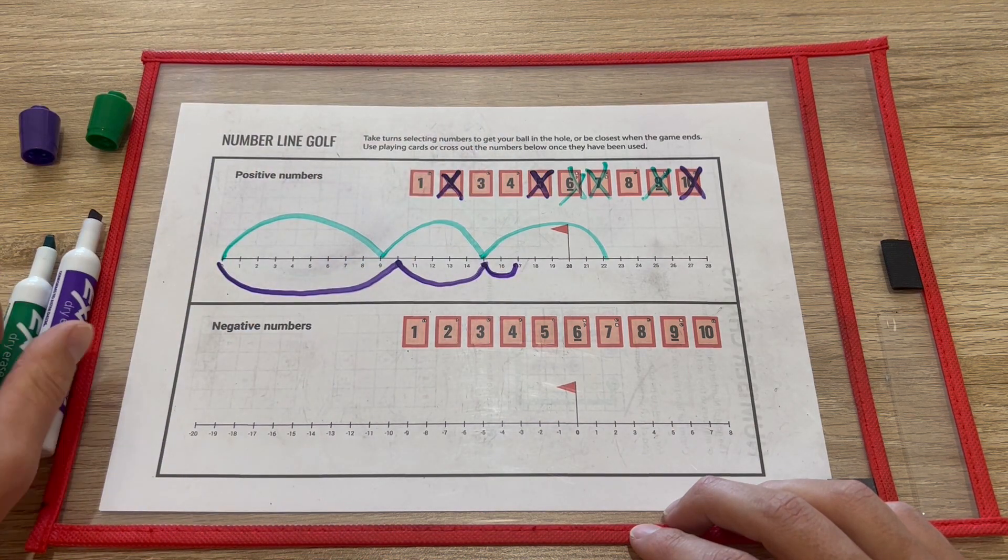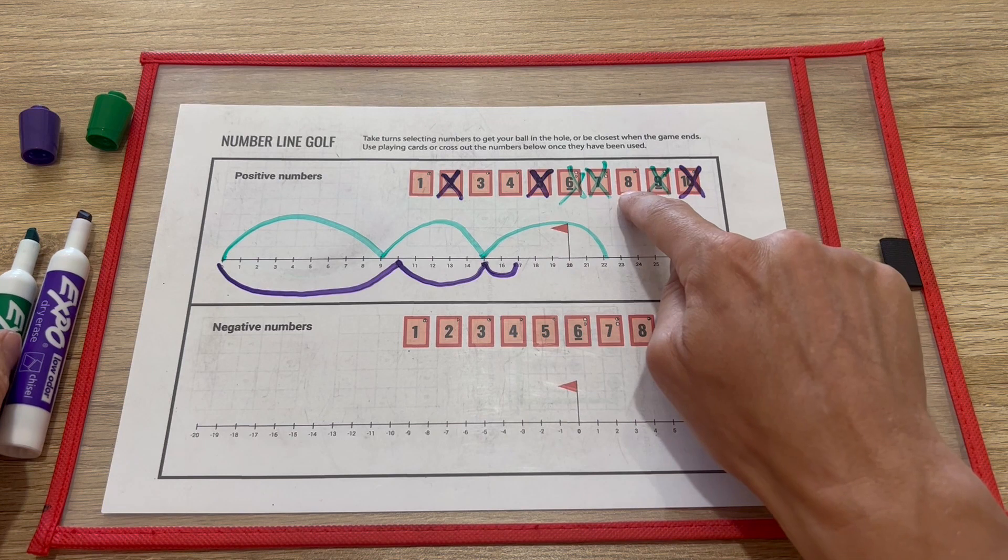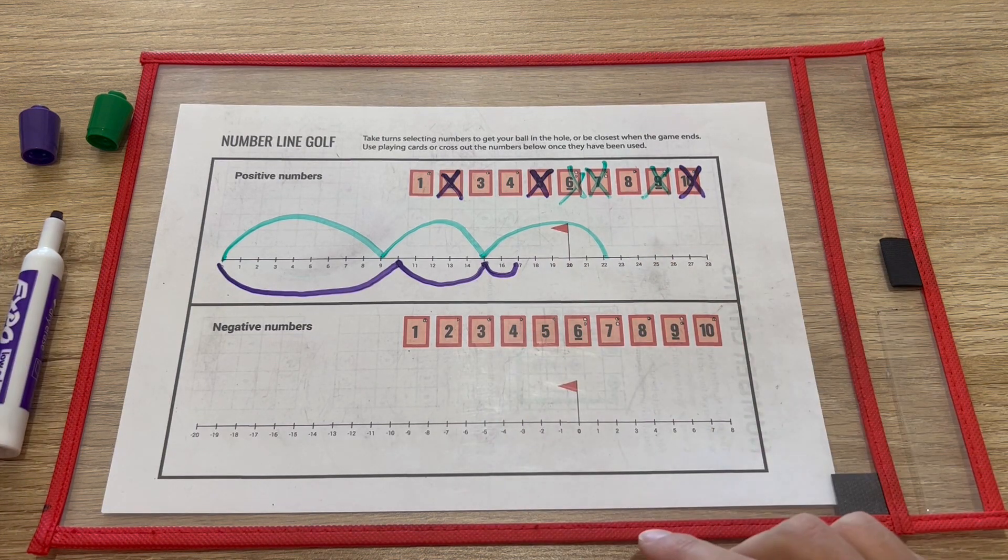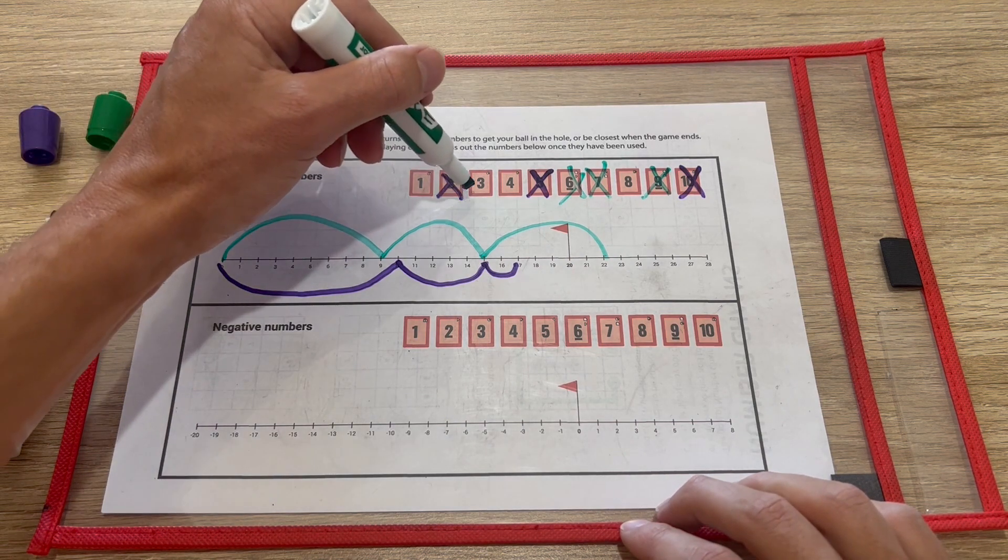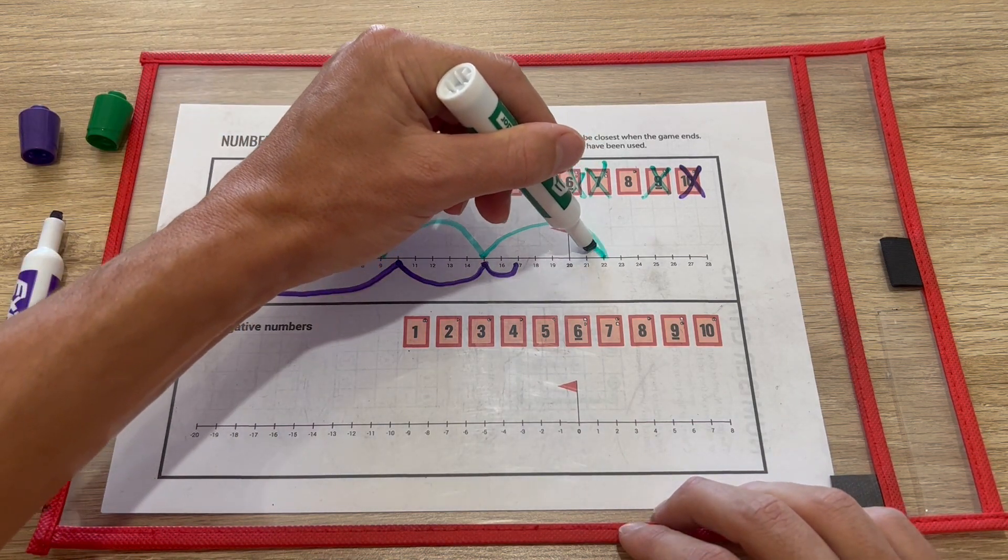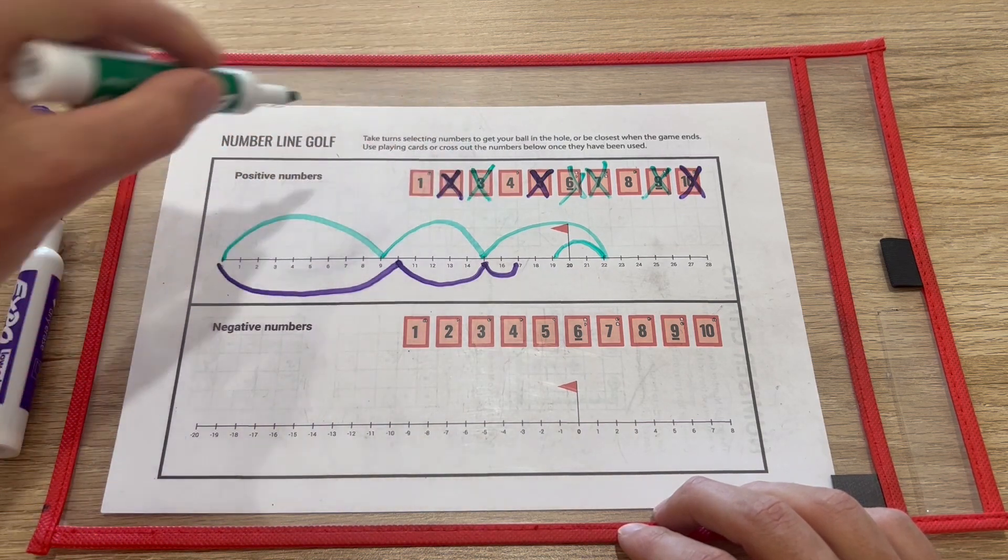And now green's getting to a point where they think, well maybe if I can leave the purple with an 8, that'll get them a long way away from the hole at the end of the game. So green's going to pick a 3 and go backwards 3, because remember you can hit the ball forwards or backwards the distance that you've chosen.